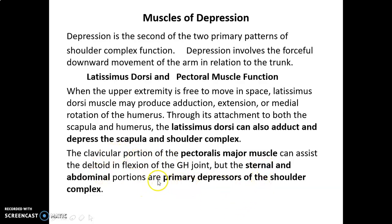The sternal, clavicular, and abdominal portions make up the pectoralis major. While pectoralis major is known as a flexor of the shoulder — flexing the humerus — the sternal and abdominal parts are the primary depressors of the shoulder complex.